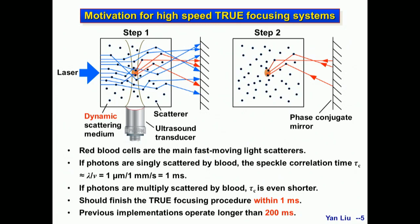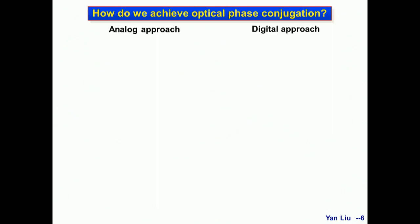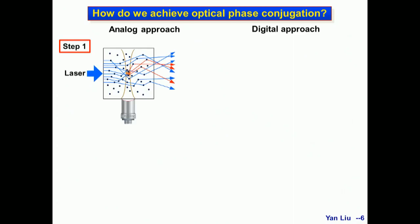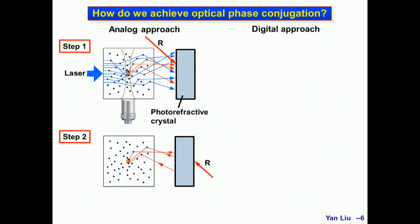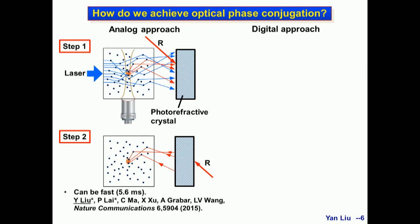To do this, we need to understand how to build a phase conjugate mirror — how to achieve optical phase conjugation in reality. There are two approaches. In the analog approach, we use a reference beam tuned to the same frequency as the ultrasound-tagged light. They interfere and write a hologram inside a photorefractive crystal. Then we use another reference beam to illuminate the crystal, and the diffracted light is phase conjugate to the ultrasound-tagged light, converging to the ultrasound focus. This method can be fast, as demonstrated in our previous paper. However, the energy gain is much less than one, meaning the time-reversed light is much weaker than the original. To achieve a higher energy gain, we switch to a digital approach.